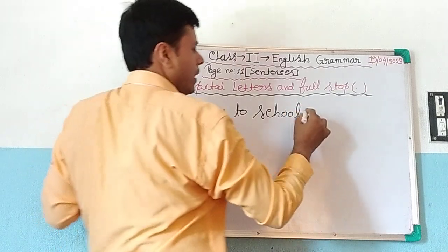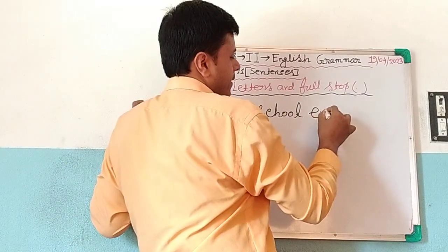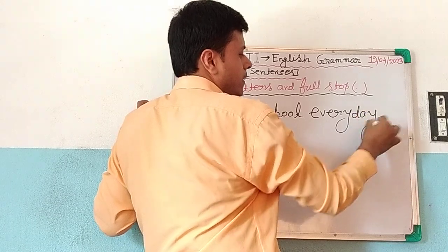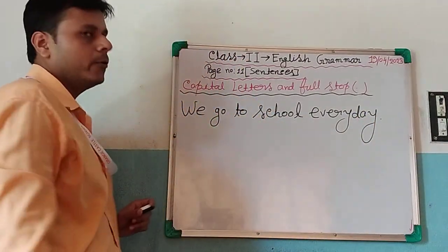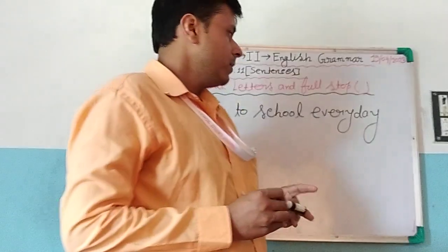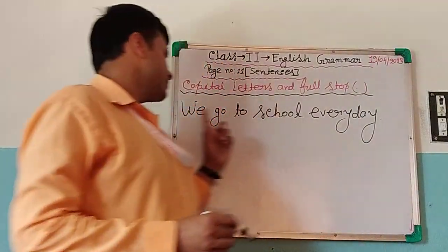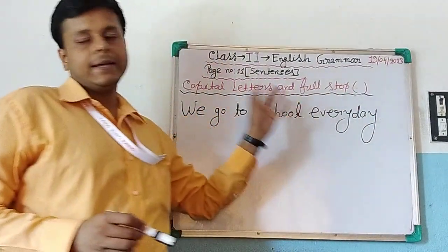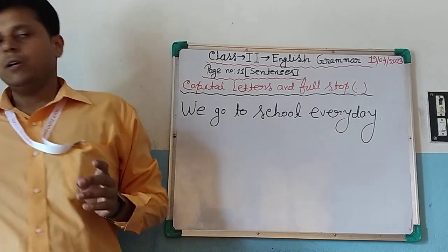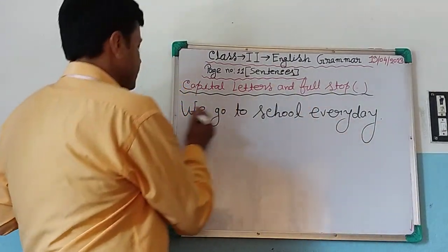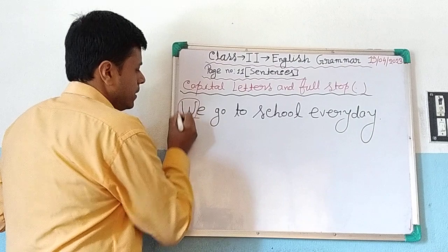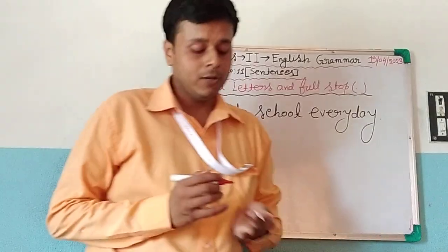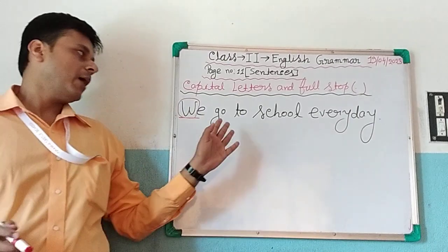Go to school every day. It's a sentence because it begins with a capital letter, ends with a full stop, and it gives us complete sense. Look at the W — this is the beginning. The beginning of a sentence is always a capital letter. So this is the first rule: how to use a capital letter.